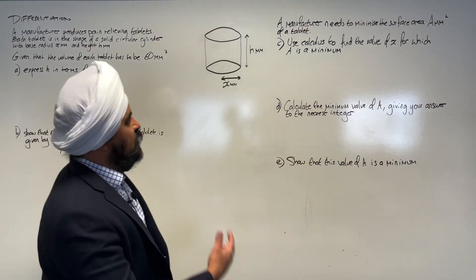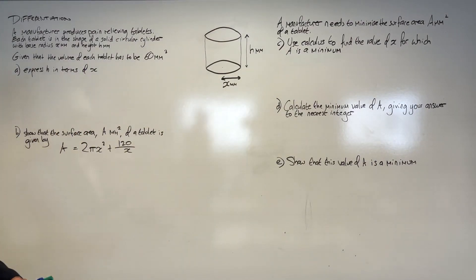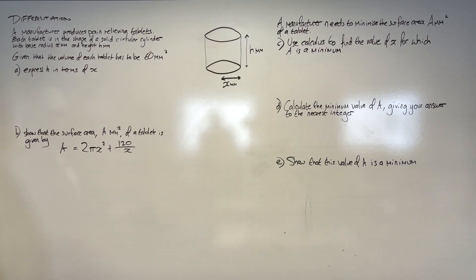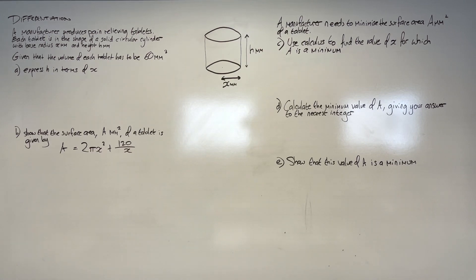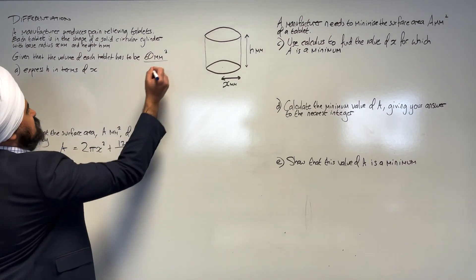Welcome to this video. We're going to go through a question on differentiation, a modelling question, where we are trying to use our skills to answer an exam question. Let's read through the question first. A manufacturer produces pain relieving tablets. Each tablet is in the shape of a solid circular cylinder with base radius x millimetres and height h millimetres. Given that the volume of each tablet has to be 60 millimetres cubed,